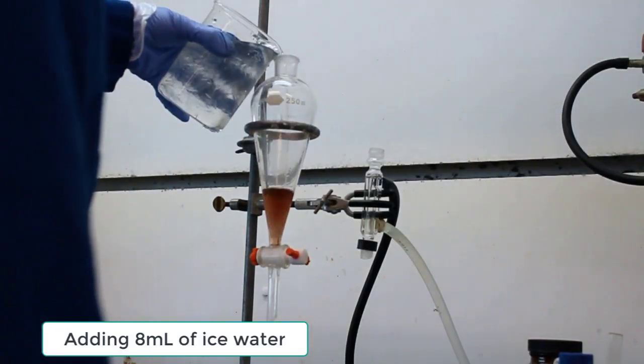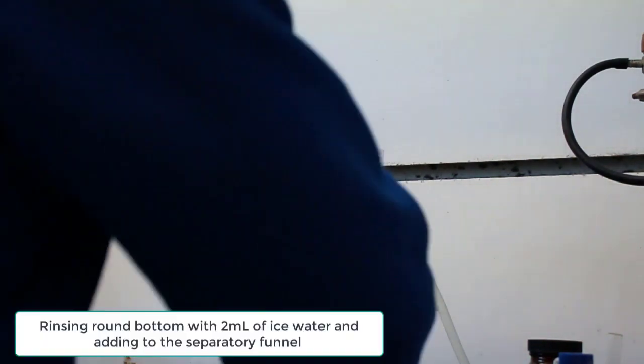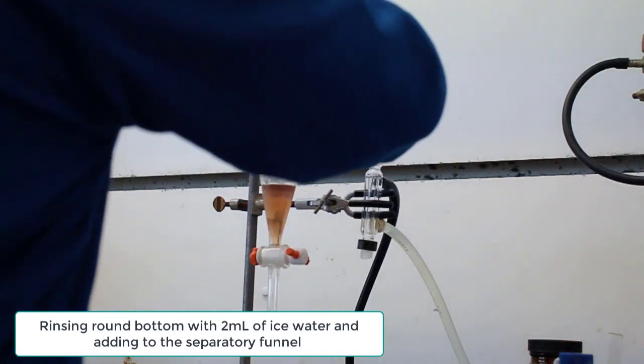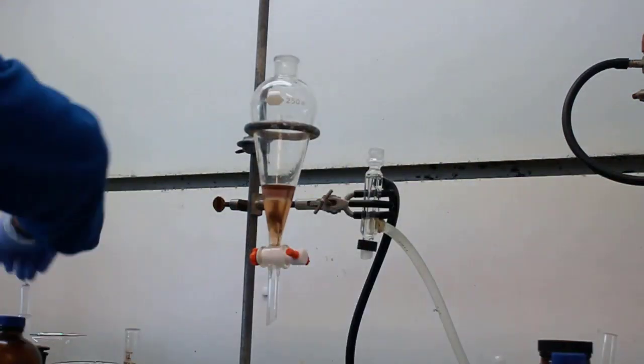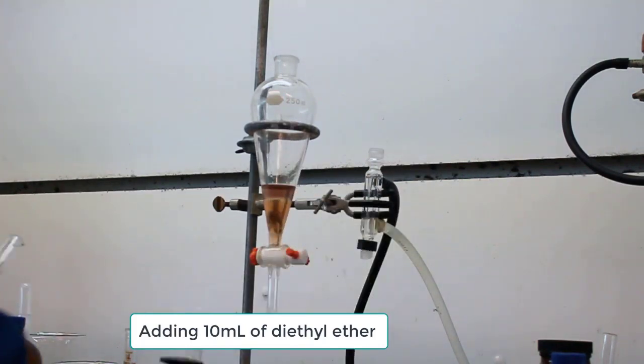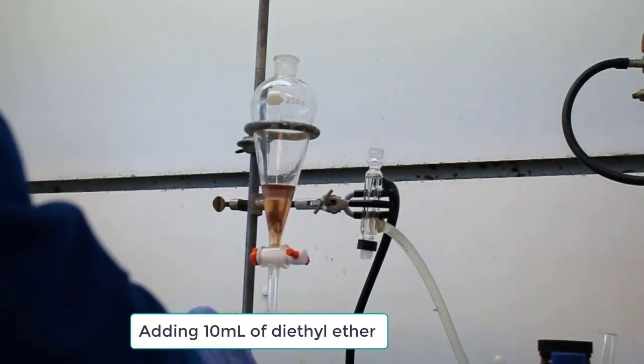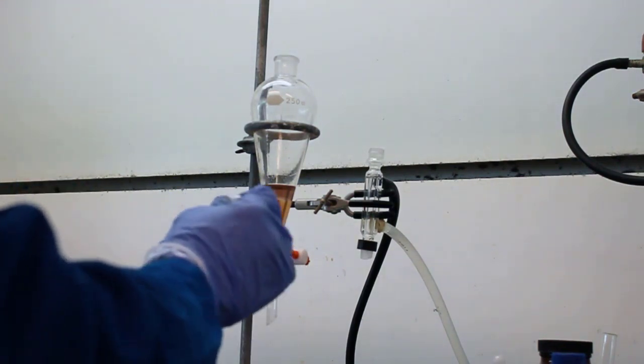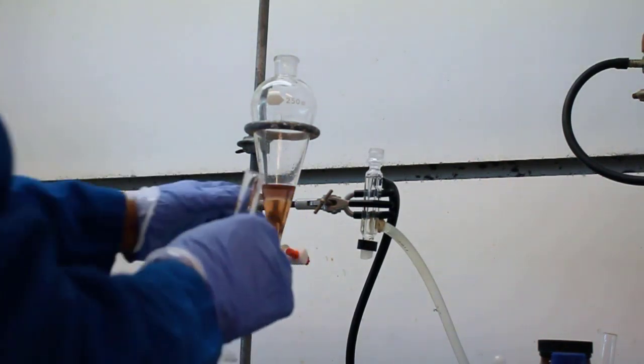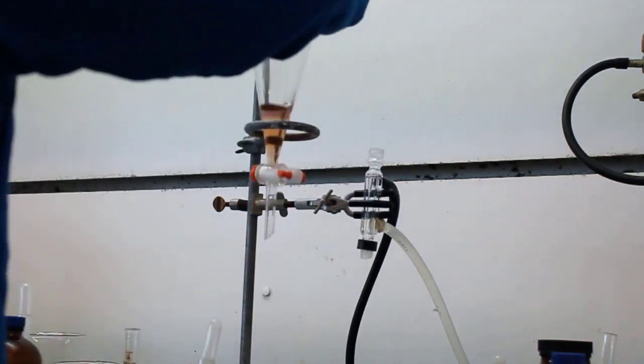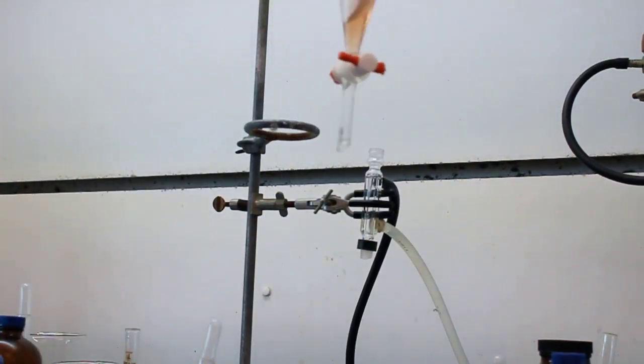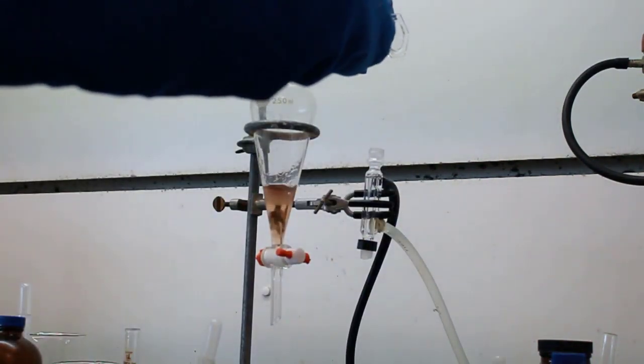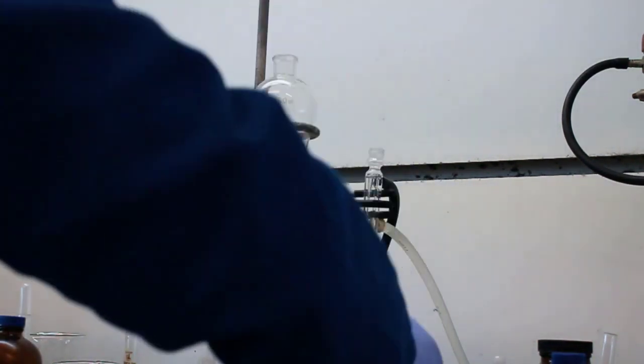First up, adding eight milliliters of ice water, and then also going to rinse the round bottom flask. Also adding 10 milliliters of diethyl ether. Shaken, not stirred.